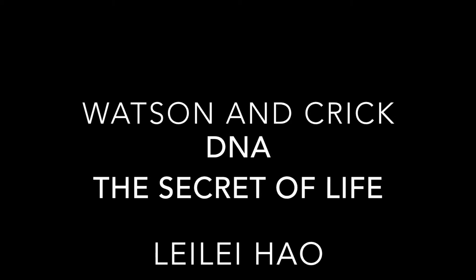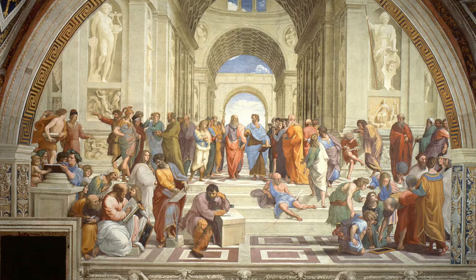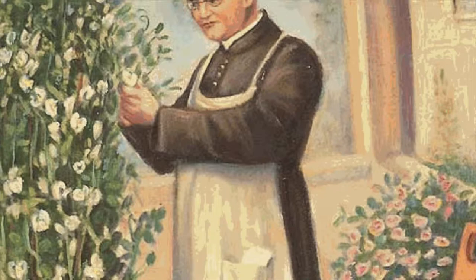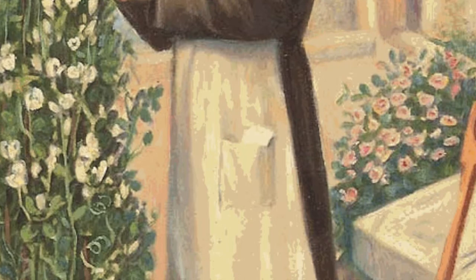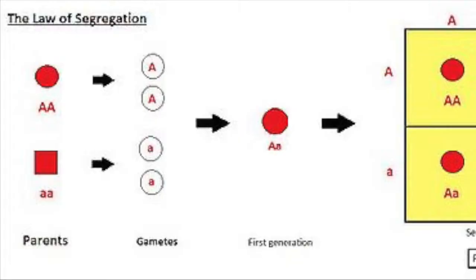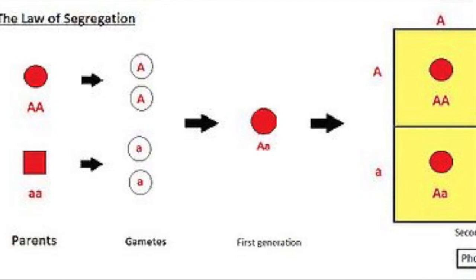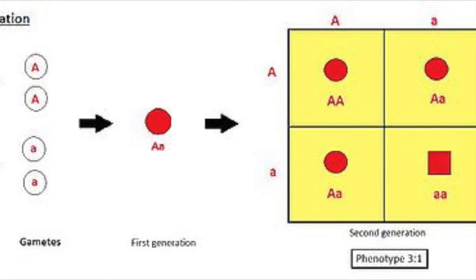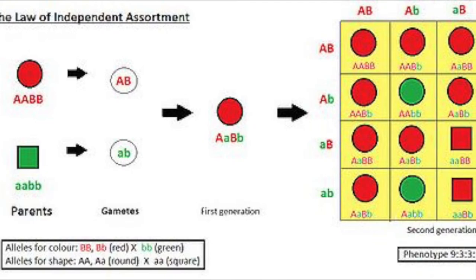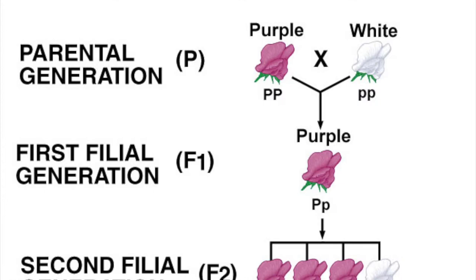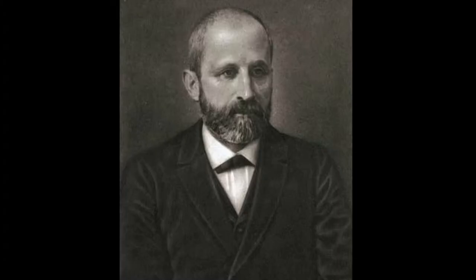Before the 1800s, people thought of genetics as a concept, and they believed it was entirely random. The first piece of the puzzle was unlocked by Gregor Mendel, known as the Father of Genetics. From 1856 to 1863, he conducted a series of experiments on peas and concluded three laws: the law of segregation, the law of independent assortment, and the law of dominance.